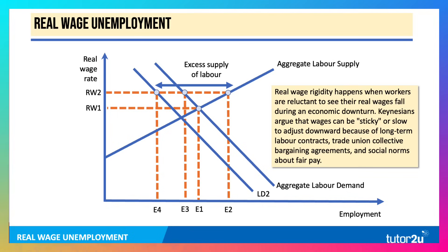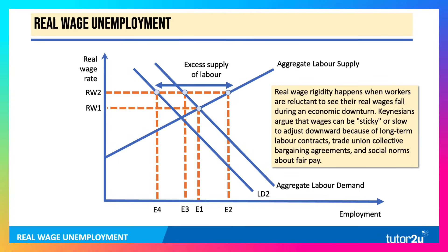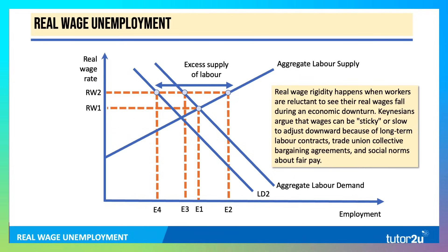Real wage rigidity happens when workers are reluctant to see their real wages fall, even during an economic downturn. Keynesians argue that wages can be sticky or slow to adjust downwards because of things like long-term labour contracts, the importance of trade union collective bargaining, and social norms about what constitutes fair pay.